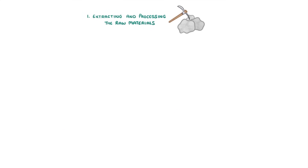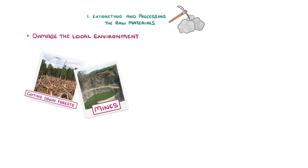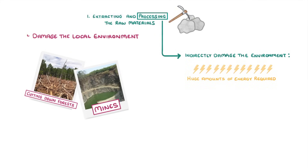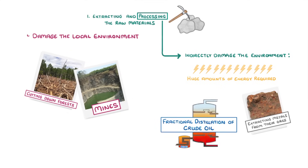When we extract resources from nature, we often directly damage the local environment — for example because we're cutting down forests for their wood, or digging huge mines to extract ores. Meanwhile, processing these materials can often indirectly damage the environment, both because of the huge amounts of energy that are often required, like when extracting metals from their ores or during fractional distillation of crude oil, and because lots of pollutants can be released, like when cleaning extracted ores.